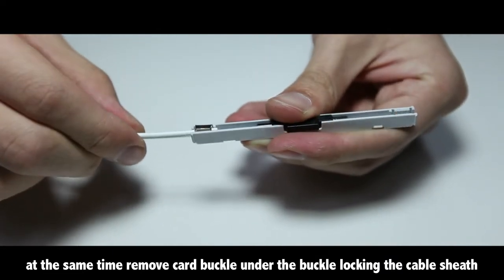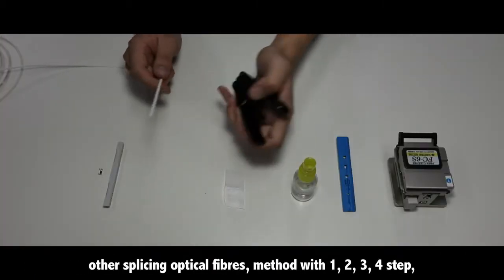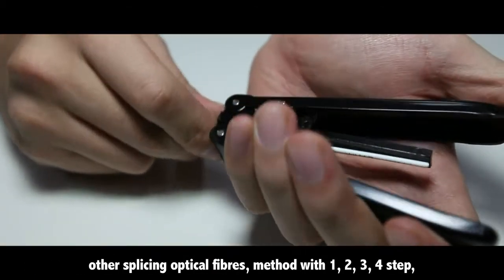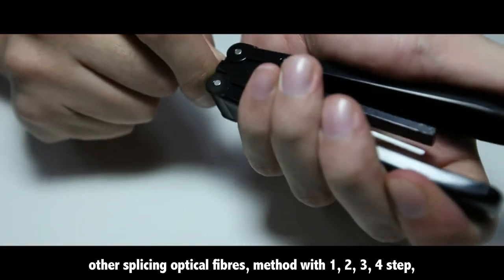Curve the tail cable to prevent it from sliding out. At the same time, remove the card buckle and lock the buckle under the cable sheath.